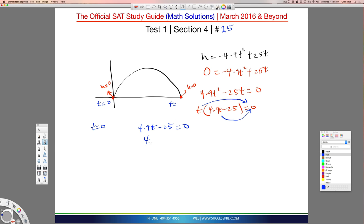So we're going to have 4.9 T minus 25 equal to zero. Move the 25 to the right side, 4.9 T equal to 25, divide by 4.9 on both sides. Now, if you look at this question carefully, it did say approximately, which means they're not really strict about the numbers.